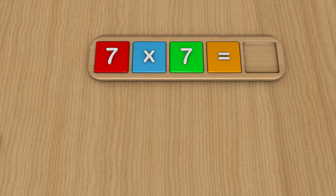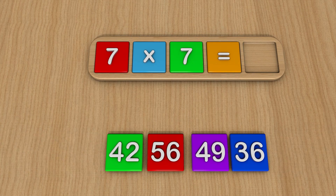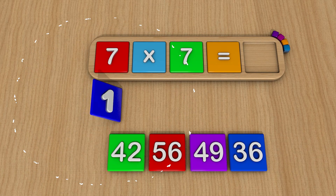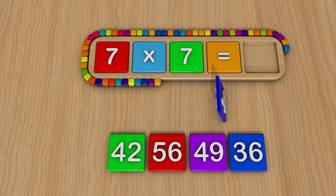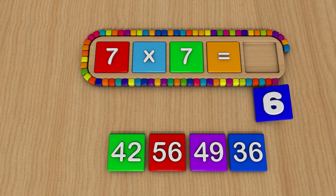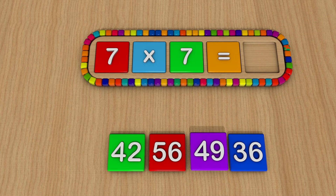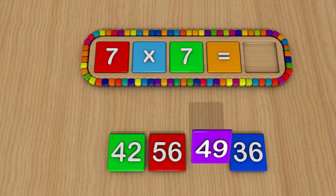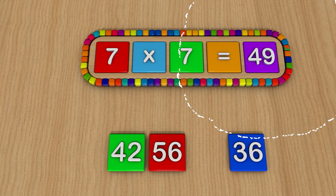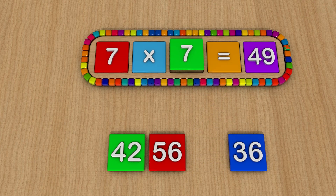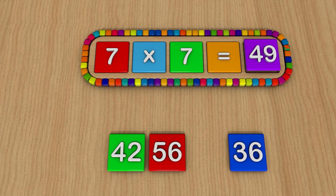7 times 7 equals... 49. 7 times 7 equals 49.